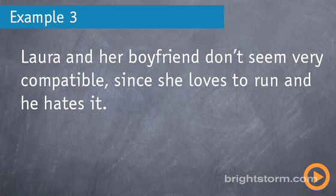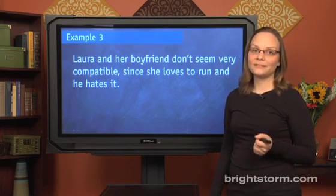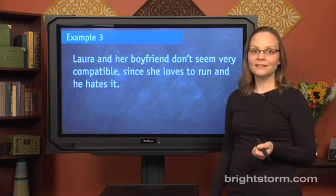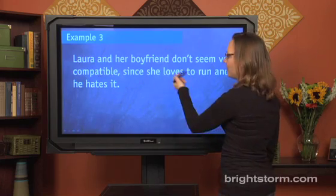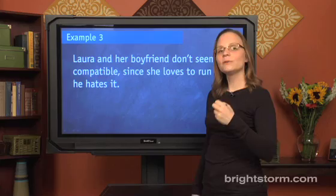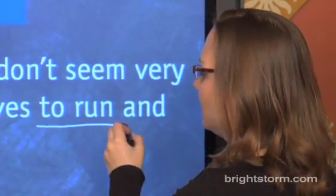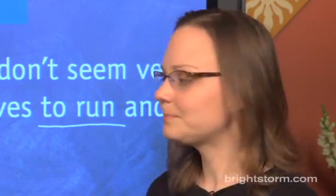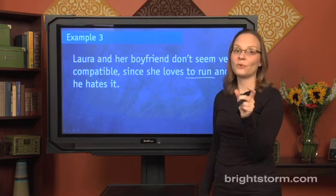Last example: 'Laura and her boyfriend don't seem very compatible since she loves to run, and he hates it.' Yet again, we probably talk this way, but it's not correct. Find the pronoun — the pronoun is 'it' — and then find the noun it's talking about, and it's nowhere in the sentence. We're talking about running, but 'to run' is a verb, not a noun. A pronoun has the word 'noun' in it because it can only stand in for a noun, not a verb.